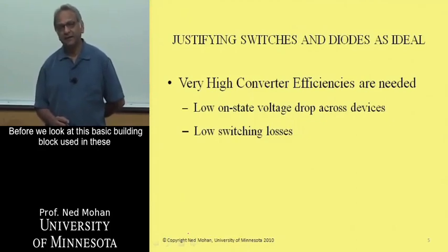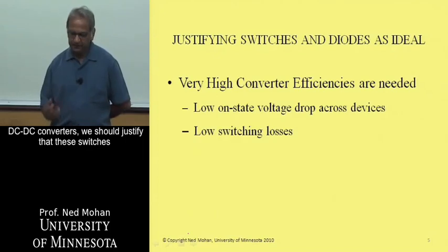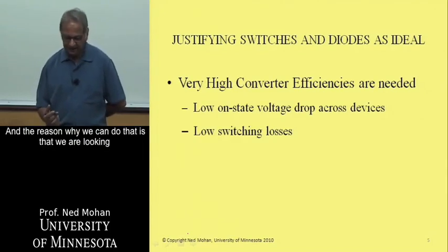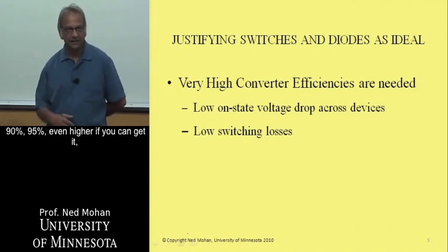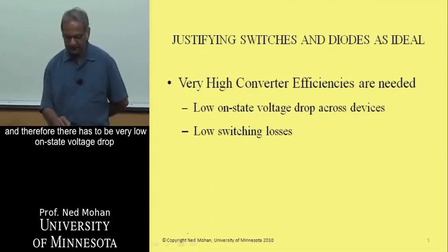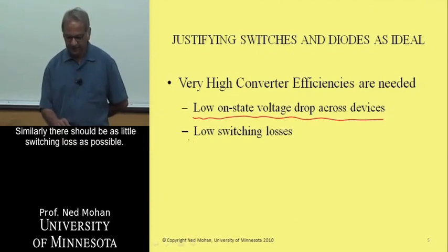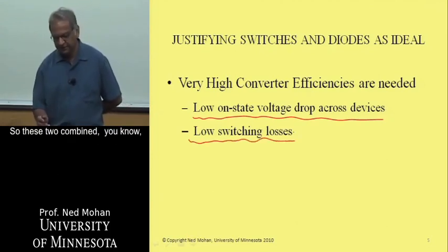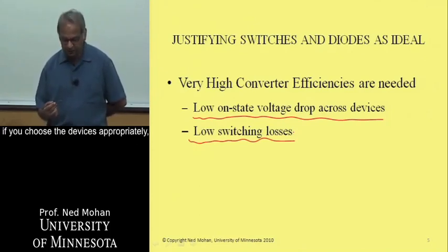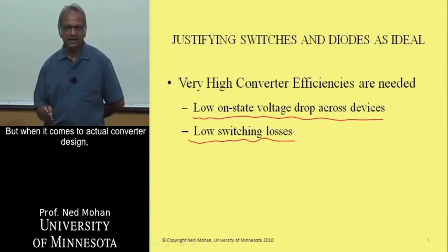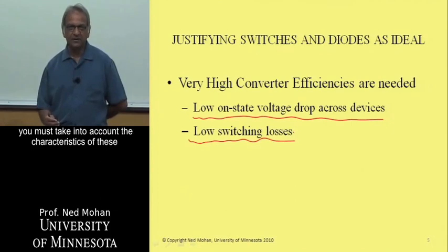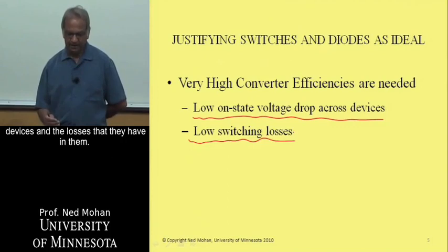Before we look at the basic building block used in these DC to DC converters, we should justify that the switches and diodes can be treated as ideal. The reason is that we are looking for very high converter efficiencies — 90%, 95%, and even higher. Therefore, there has to be very low on-state voltage drop across these devices and as little switching loss as possible. If we choose the devices appropriately, it is justified for analysis purposes to treat them as ideal. But for actual converter design, we must account for the characteristics of these devices and the losses they incur.